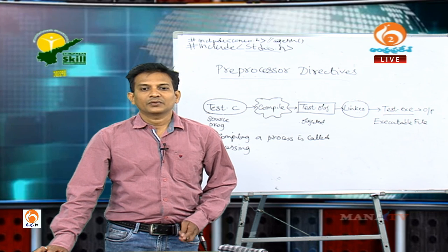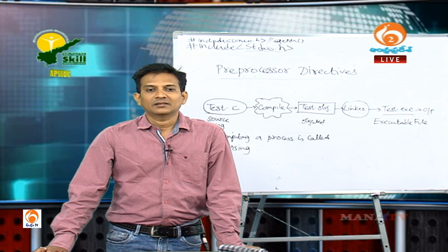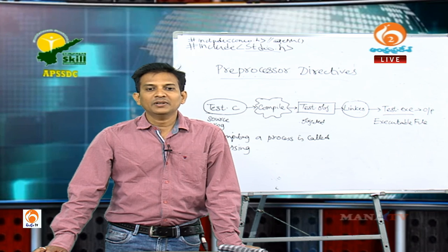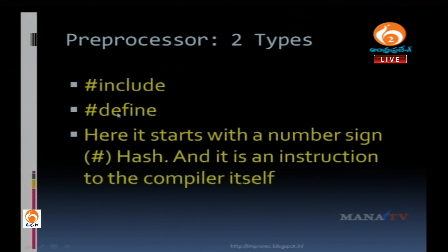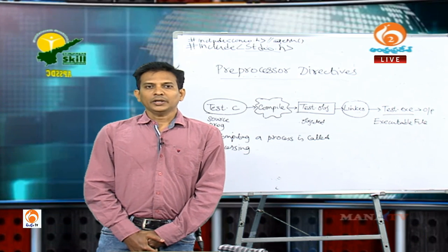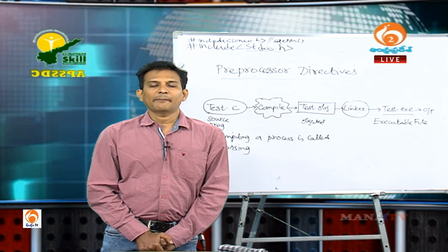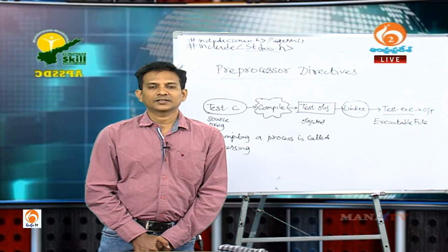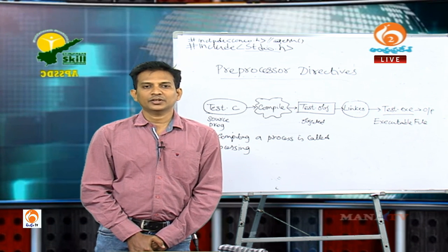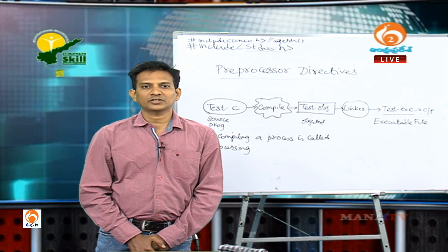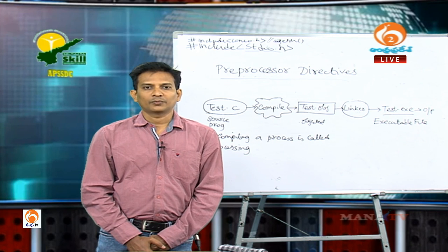The # symbol means it starts with a number sign — it is an instruction to the compiler. In tomorrow's session we will see macros and the details of preprocessor directives. We will continue preprocessor directives and macros in the next session.